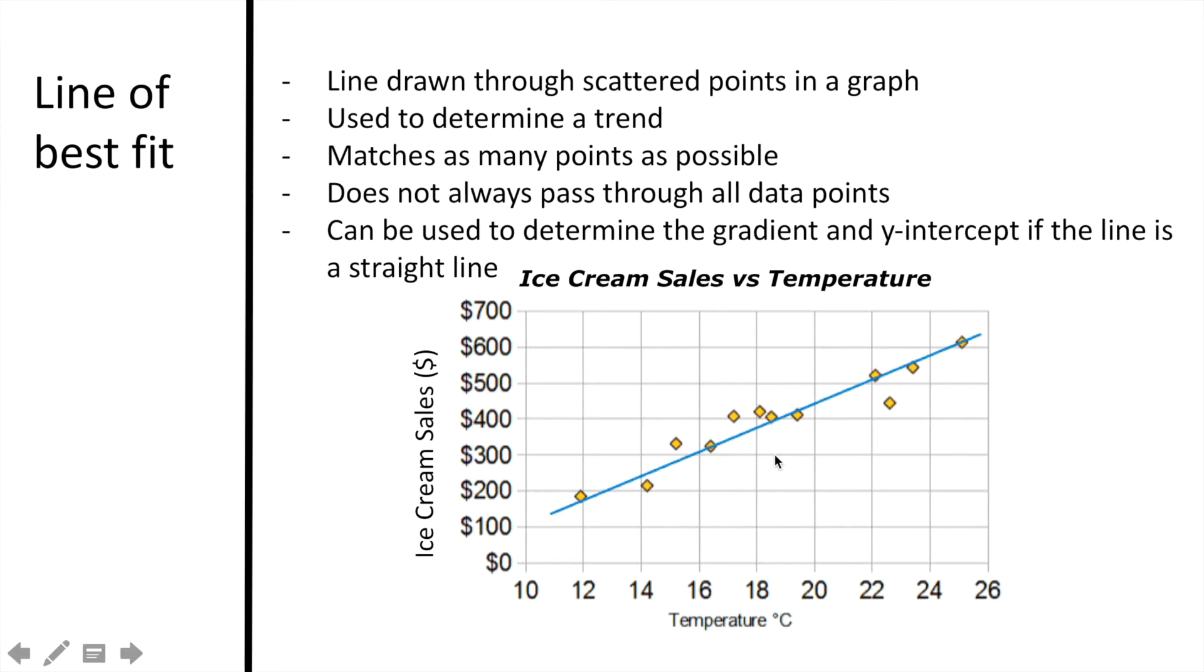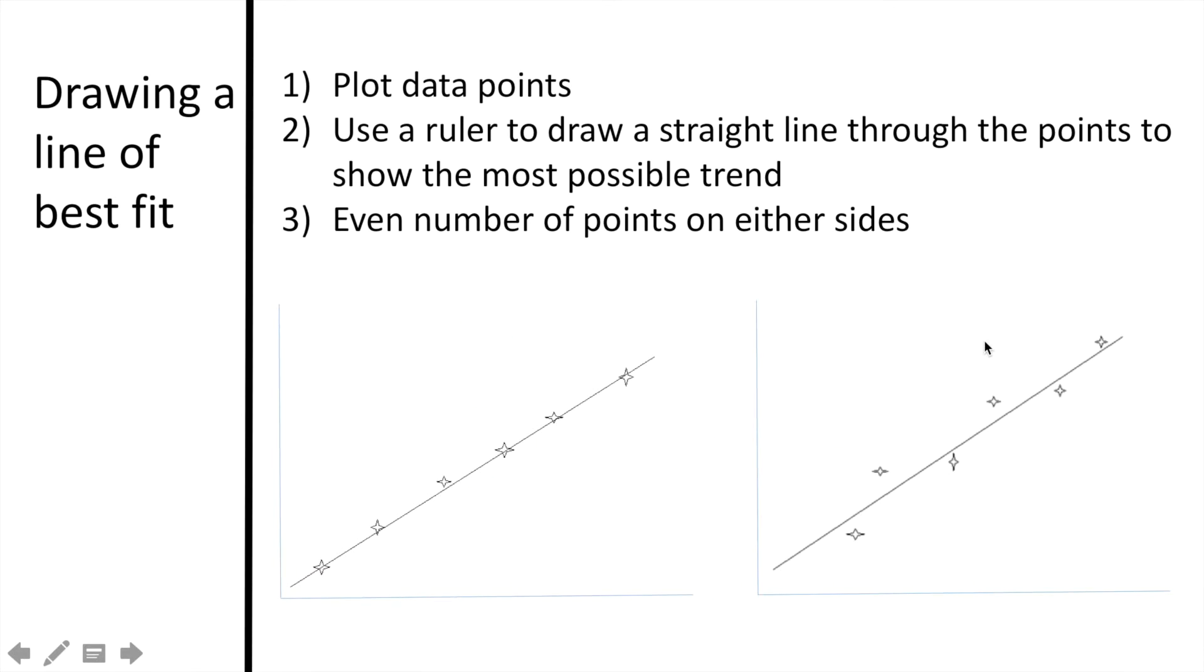Look at the graph below. Notice the scattering of the various coordinates. A line has been drawn to show the best slope that the data represents. Let's learn how to draw a line of best fit. The first step is to plot the data points. The second step is to use a ruler or other straight-edged object to draw a line through the points while creating an even number of points on either side.